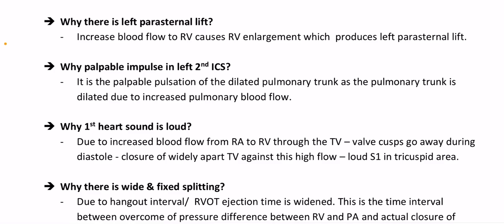Why is there a palpable impulse in the left 2nd intercostal space? It is the palpable pulsation of the dilated pulmonary trunk, which is dilated due to increased pulmonary blood flow. Why is the first heart sound loud? Due to increased blood flow from RA to RV through the tricuspid valve; the valve cusps move widely apart during diastole; closure of the widely-apart tricuspid valve against this high flow produces a loud first heart sound in the tricuspid area.